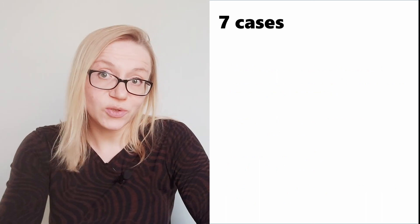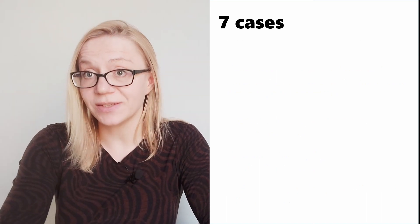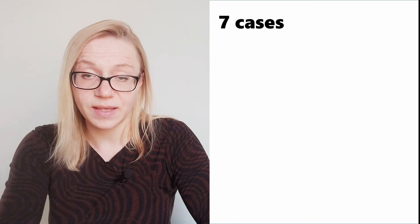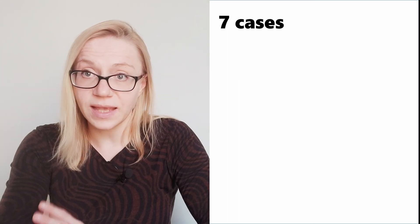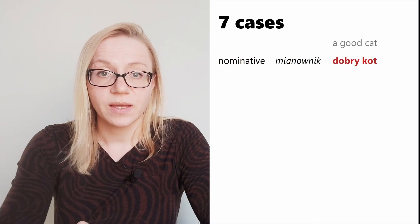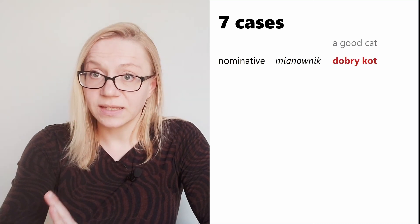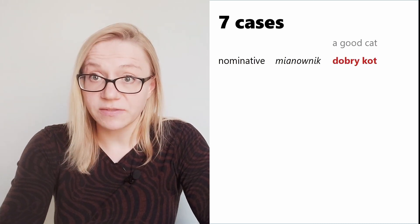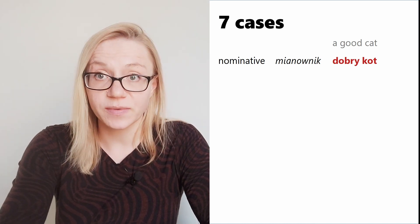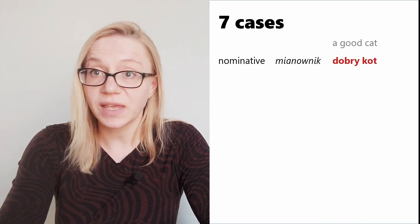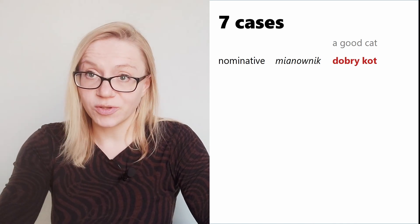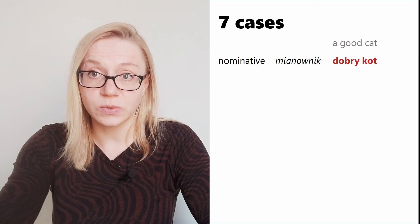In Polish we have seven grammatical cases. Let's have a quick glance at them — their names and some examples. The first basic case is the nominative case, or in Polish 'mianownik'. An example: 'dobry kot' — 'a good cat'.